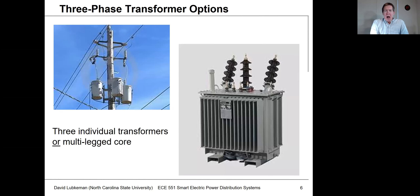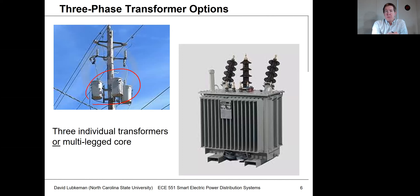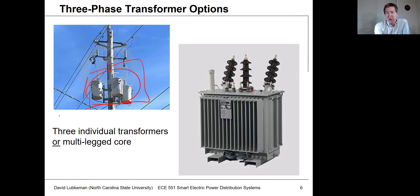As far as how we build a three-phase transformer, there are two different ways. One is to take single-phase transformers and connect them up. Based on how I connect them on the primary and secondary sides, I can get a delta or a Y connection. This approach can take up quite a bit of space, so if space isn't an issue — say mounting on top of a pole — then by all means use three single-phase transformers, which gives the most flexibility.